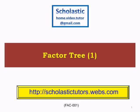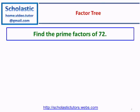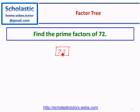Find the prime factors of the number 72. We write the number 72 to start with, and it is a composite number, so we will put a rectangle around the number and try to find the factors for 72.